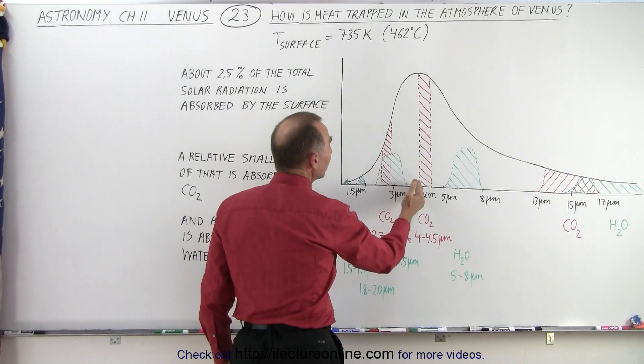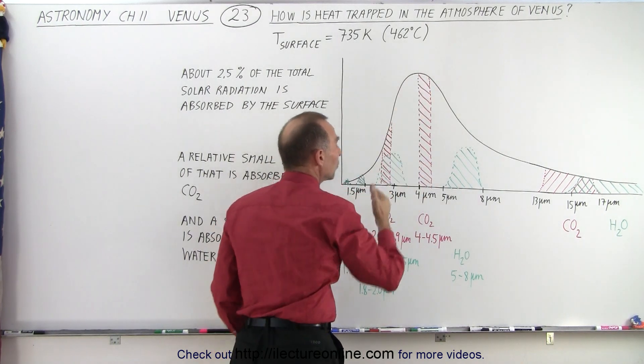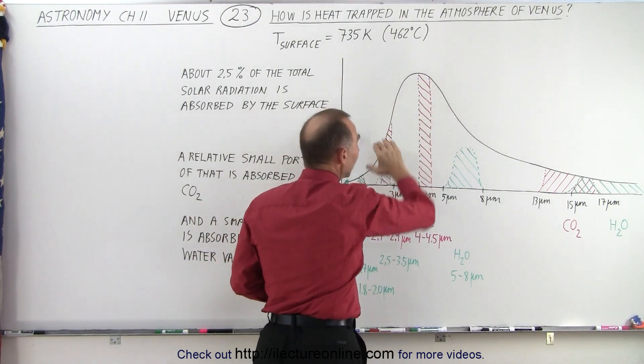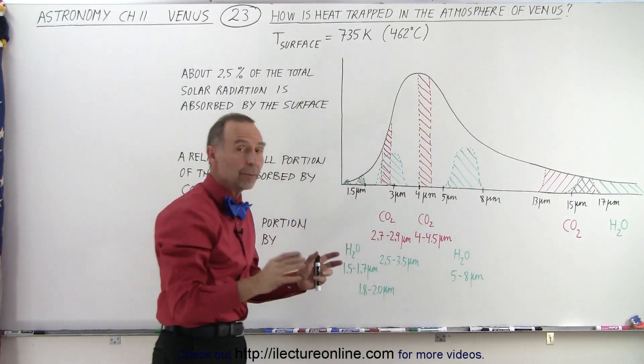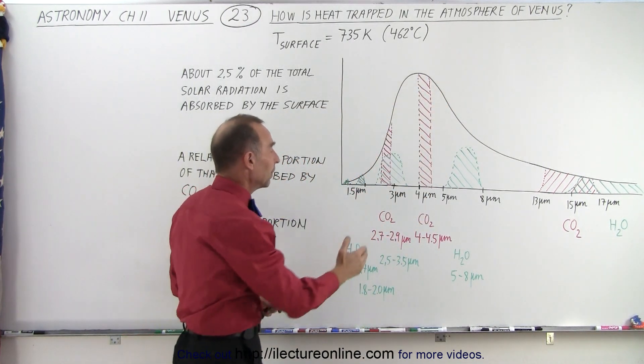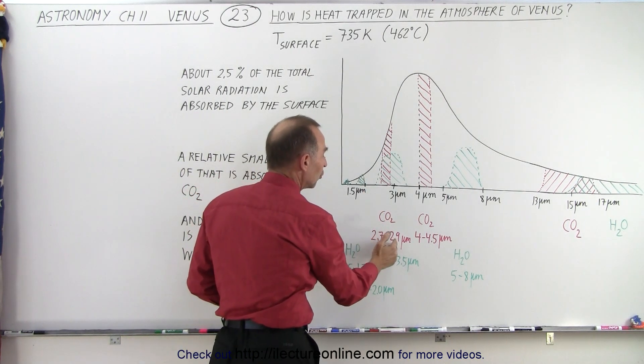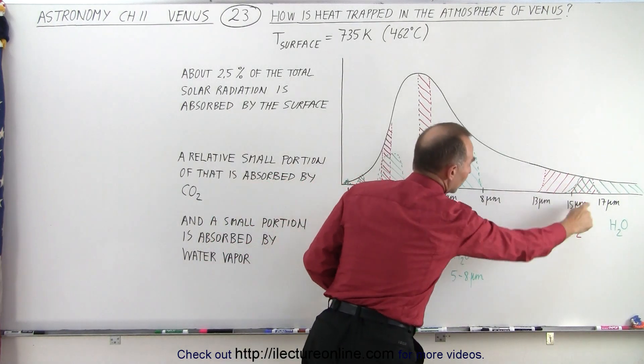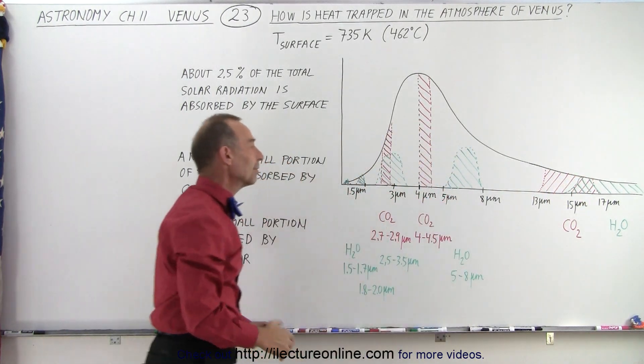On Venus, that's not the case. On Venus, these are two very strong absorption bands, because the radiation curve is very high at those particular wavelengths. So carbon dioxide does most of its absorbing at the 2.7 to 2.9 micrometers, and 4 to 4.5 micrometers, and not so much around the 15 micrometer band.